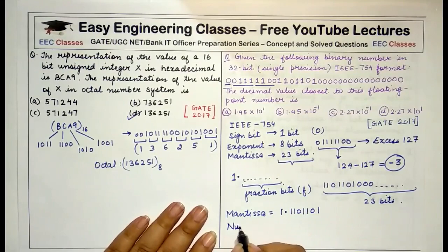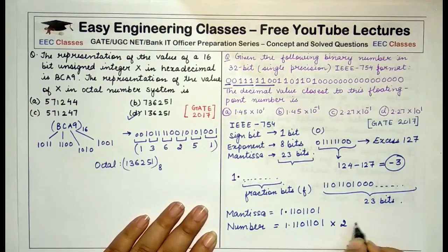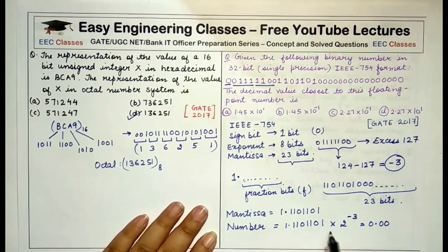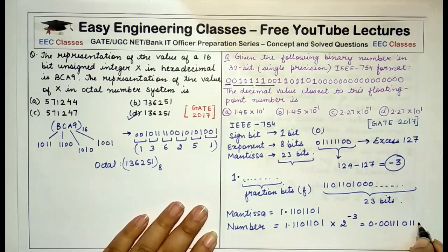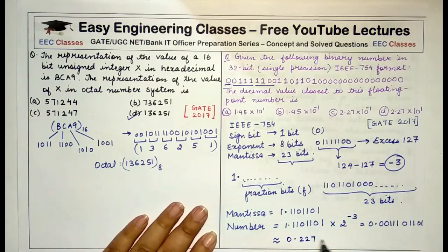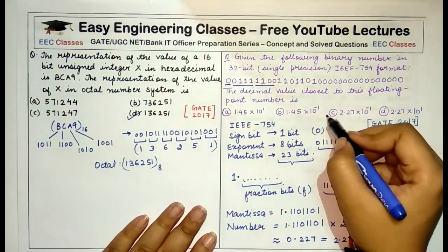And the final number using all these three components can be expressed as 1.11101101 multiplied by 2 to the power of exponent that we calculated which is minus 3. So this can be written as 0.001 and this number, which would come out to be 11101101. So the final answer, that means the decimal value closest to this representation is 0.227, which is equal to 2.27 into 10 raised to the power minus 1. If you convert it you will get this value and this option is represented by option C.